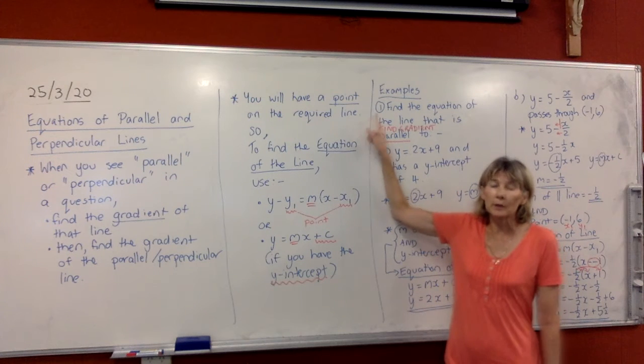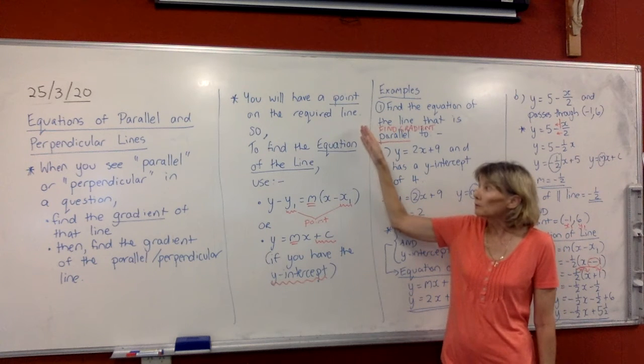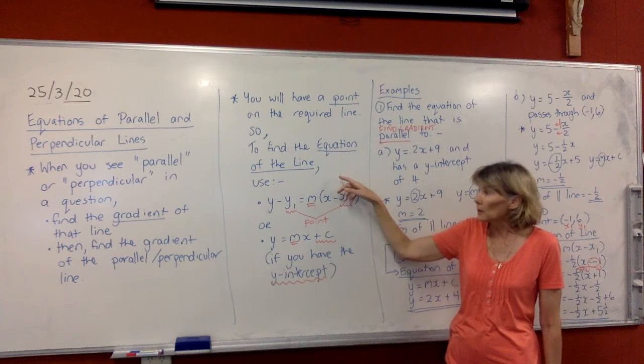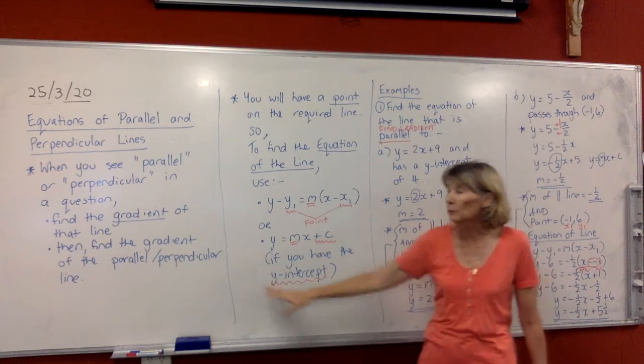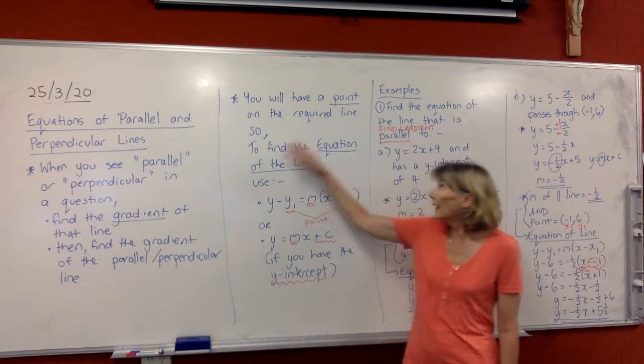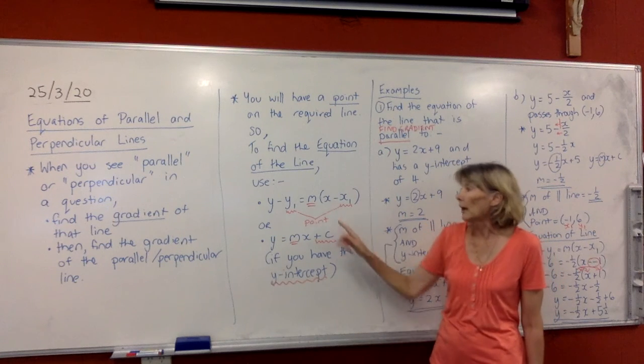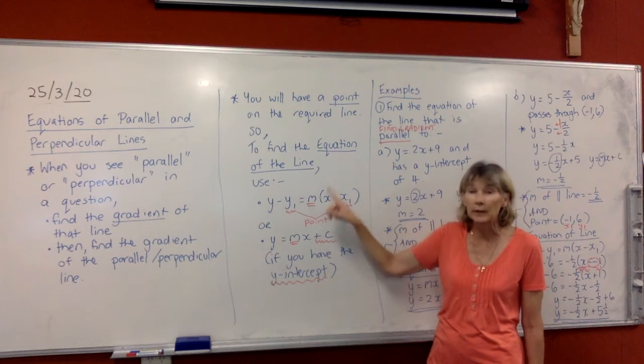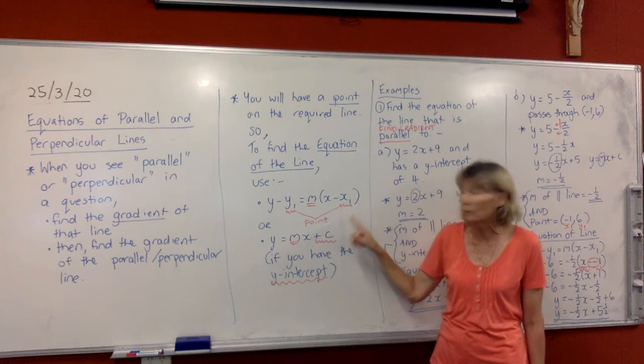Then you will notice that in the question you will have a point on the line that you're required to find the equation of. So we're going to use the gradient we find over here and the point that you've got and put them together in this formula here to find the equation of the line. Of course that is the equation of the line formula.